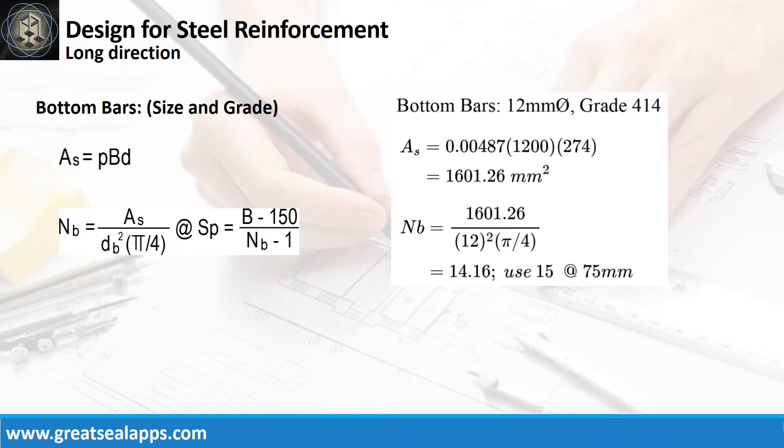Continuing at long direction: given rho equals 0.00487, B equals 1,200 mm, and D equals 274 mm. The area of steel for long direction bars is 1,601.26 square millimeters, and the number of bars for 12 mm bar is 15.